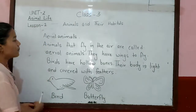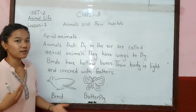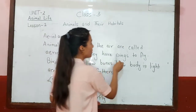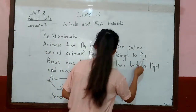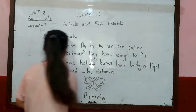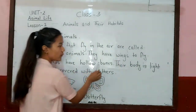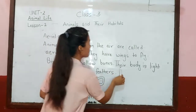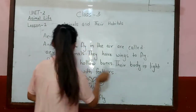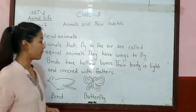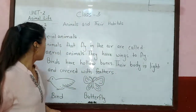Examples of aerial animals include birds and butterflies. They have wings to fly. Birds have hollow bones and their body is light and covered with feathers.